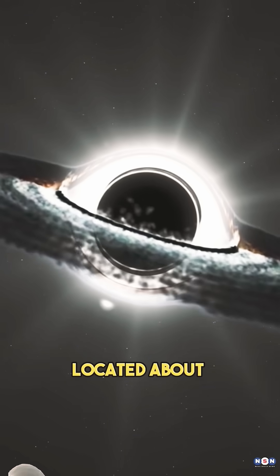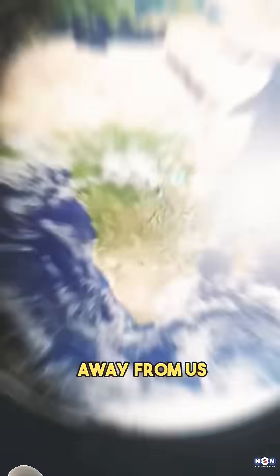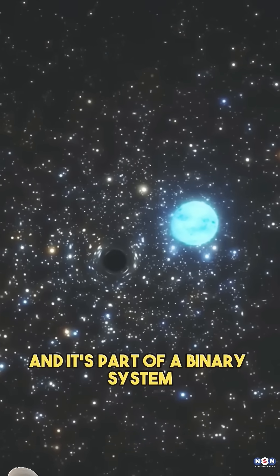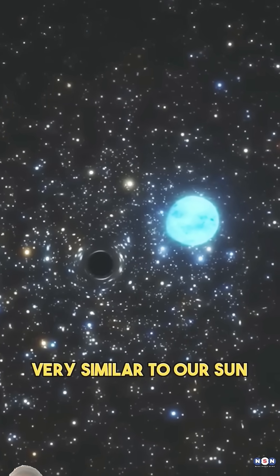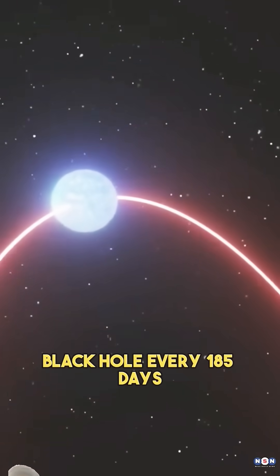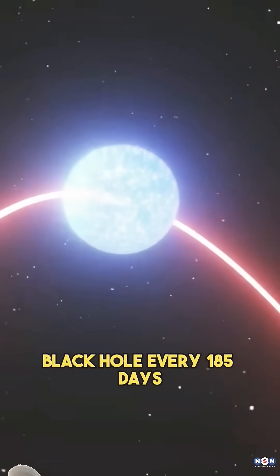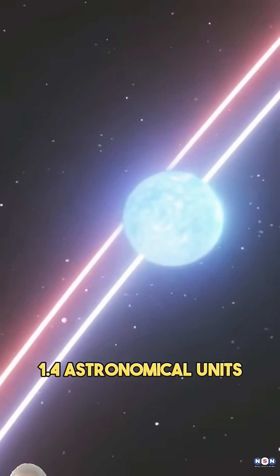Gaia BH1 is a black hole located about 1560 light-years away from us, and it's part of a binary system with a star that is very similar to our Sun. This star orbits the black hole every 185 days at a distance of about 1.4 astronomical units.